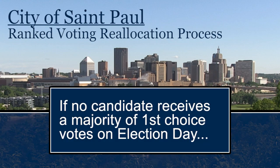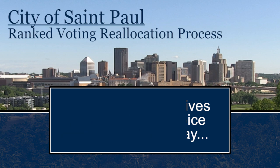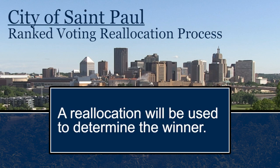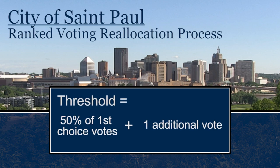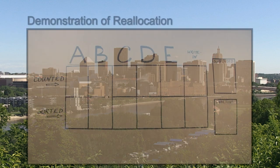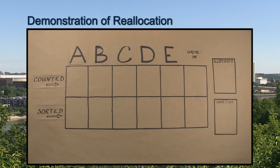If no candidate receives a majority of first choice votes cast on election day, a reallocation will occur to determine the winner. A candidate is declared the winner once a candidate meets the threshold. The following example demonstrates the reallocation process used in municipal elections in the city of St. Paul.